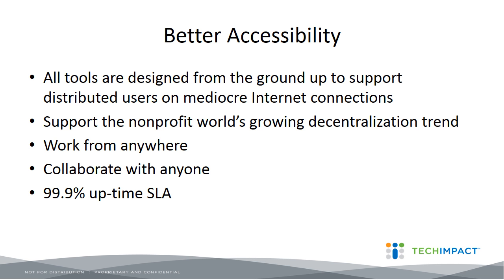Also, much better accessibility — everything is designed to work on a mediocre Internet connection with distributed groups. Old technologies like CIFS shares and mapped network drives are not designed to work over an Internet connection. Office 365 is designed to do that, and being able to move these key parts of your infrastructure to the cloud is a really big benefit in terms of accessibility. Microsoft has a 99.9% uptime SLA that is financially backed — they will refund you if they don't meet their SLA in a month. They have a financial interest in keeping services up and running.